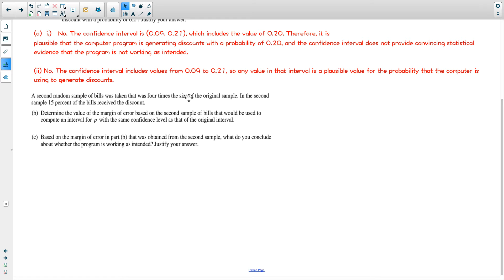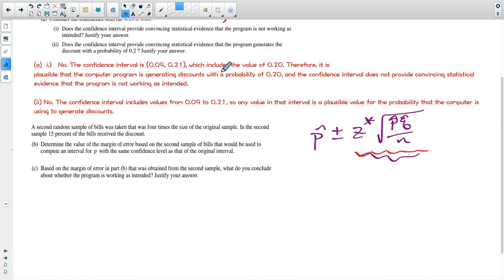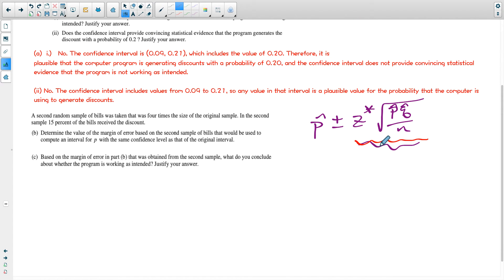Let's bring up the formula for a confidence interval. Here is the confidence interval formula that we use. Remember Q is 1 minus P. So if you figure out P, you do 1 minus P and that'll give you Q. This part of the formula right here is called the margin of error. That's the part you add and subtract, and that was equal to 0.06 before.